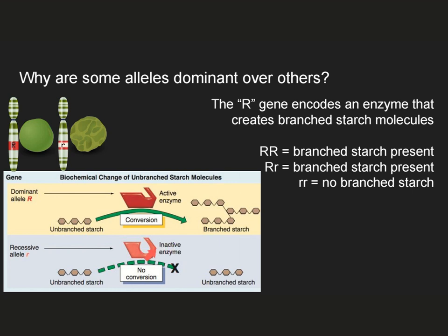So if a pea has two copies of the little R allele, they have two copies of an inactive enzyme — a product that doesn't work. They can't do this conversion process at all, there will be no branched starch, and they show the wrinkled phenotype. In other words, the big R, big R and big R, little R genotypes have branched starch present, which is enough to confer the round phenotype. Little R, little R has no branched starch, which confers the wrinkled phenotype.